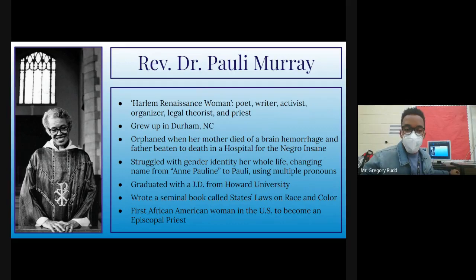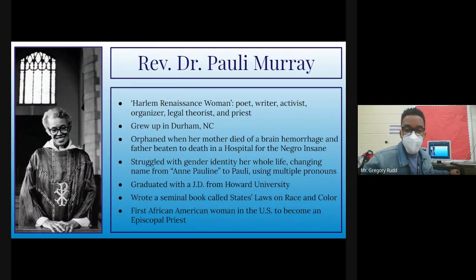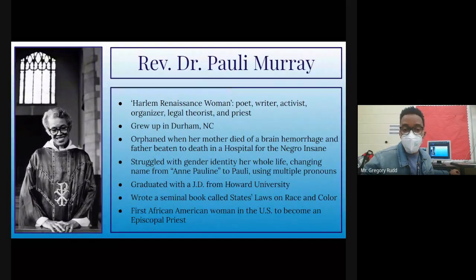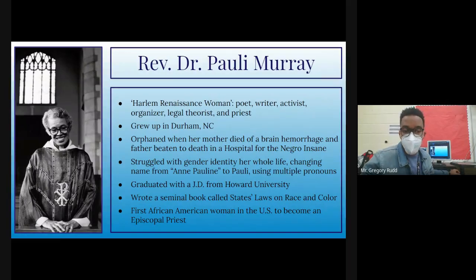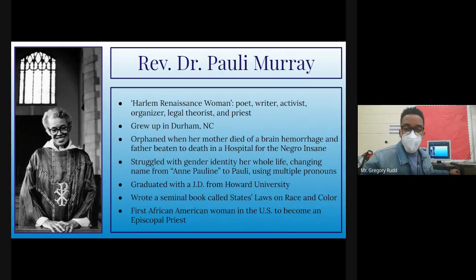She also had another unique struggle — the struggle with gender identity, which is becoming more commonly discussed in 2021. She changed her name from Ann Pauline to Pauli, and was known to refer to herself using multiple pronouns in her writing. Today, historians refer to Dr. Murray using she/her, he/him, and they/them pronouns. In many ways she was ahead of the curve when it came to gender expression.